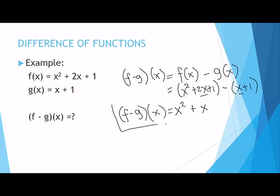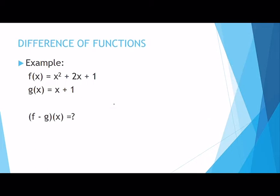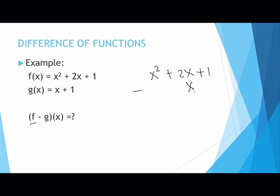Just as with addition, you can also do subtraction vertically. Write f(x) on top: x² + 2x + 1, and subtract g(x): x + 1 below it. You cannot interchange the two. Align like terms — x under 2x, and 1 under 1 — because they are like terms.